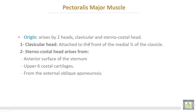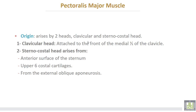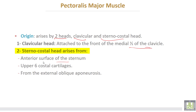The pectoralis major muscle. The origin of the pectoralis major arises by two heads: number one, the clavicular head; number two, the sternocostal head. The clavicular head is attached to the front of the medial half of the clavicle, while the sternocostal head arises from the anterior surface of the sternum and the upper six costal cartilages.